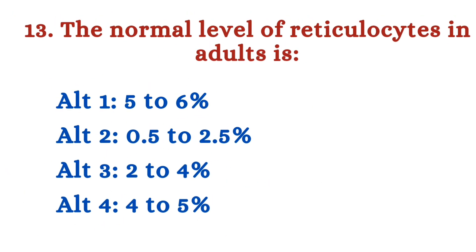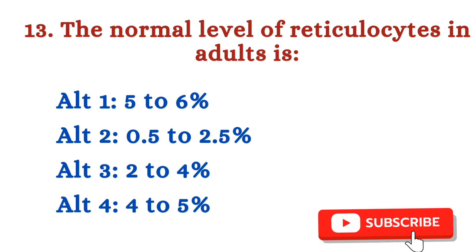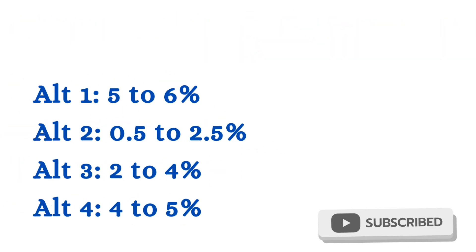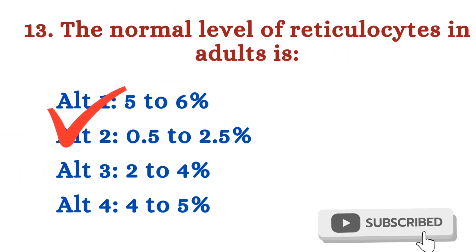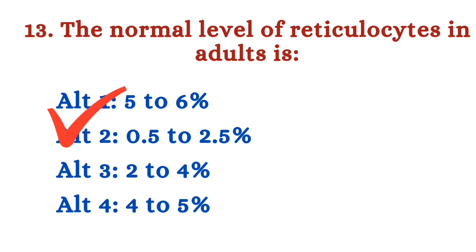Question number 13: The normal level of reticulocytes in an adult is — Option 1: 5 to 6%. Option 2: 0.5 to 2.5%. Option 3: 2 to 4%. Option 4: 4 to 5%. The right answer is Option 2 — 0.5 to 2.5%. The normal level of reticulocytes in an adult is 0.5 to 2.5%.